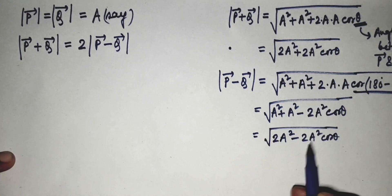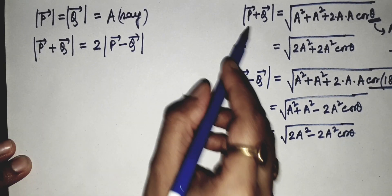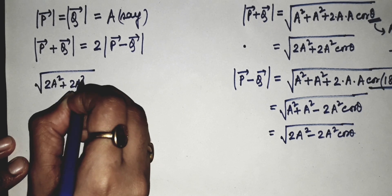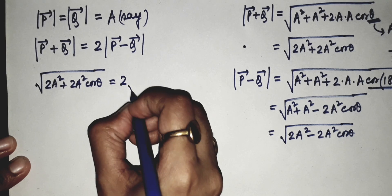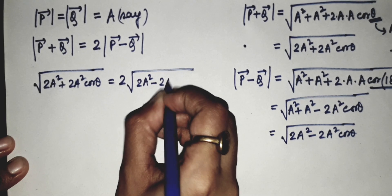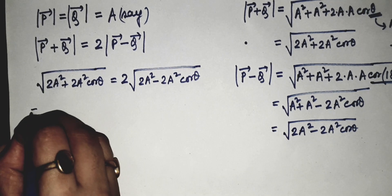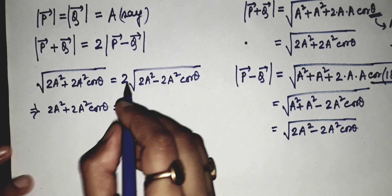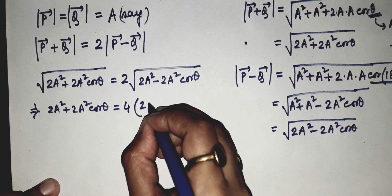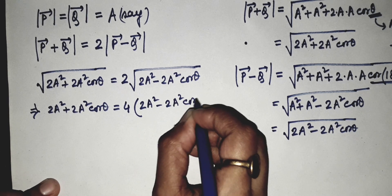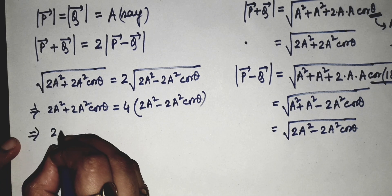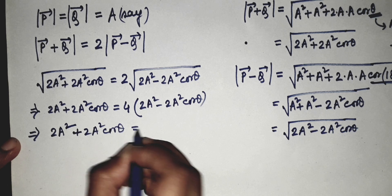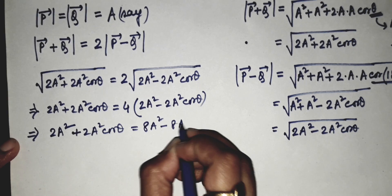We can now substitute these two expressions into our equation. We get: square root of (two A squared plus two A squared cos theta) equals two times square root of (two A squared minus two A squared cos theta). Squaring both sides gives: two A squared plus two A squared cos theta equals four times (two A squared minus two A squared cos theta), which expands to: two A squared plus two A squared cos theta equals eight A squared minus eight A squared cos theta.